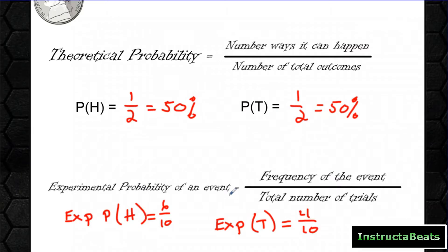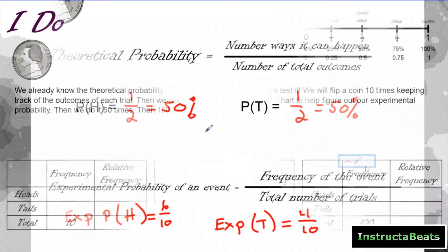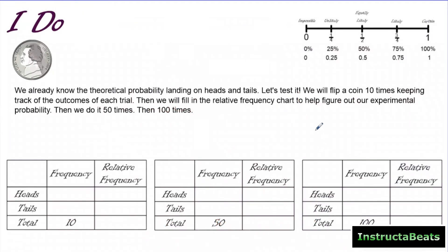So you can see the difference right here. Theoretical probability is what we expect to happen. Experimental probability is what actually happens when we do the experiment. So let's actually do this experiment together and see what happens when we flip the coin. We already know the theoretical probability of landing on heads and tails, but let's test it.